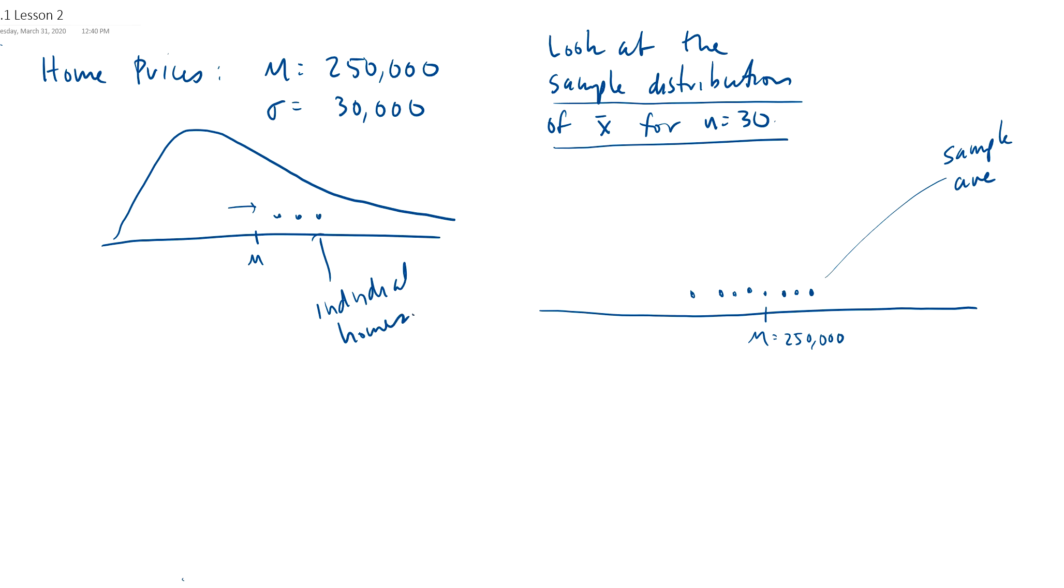And something really great happens. Here, no matter what this distribution looks like, it's skewed, right? This distribution is going to end up being normal. This will be approximately normal. As long as n is bigger than 30, or equal to 30, or close to that. This is a great result, a statistical result called the central limit theorem.